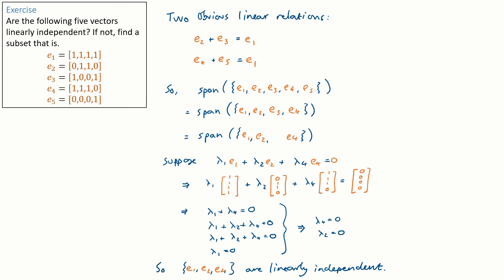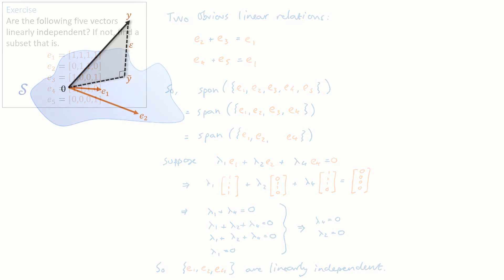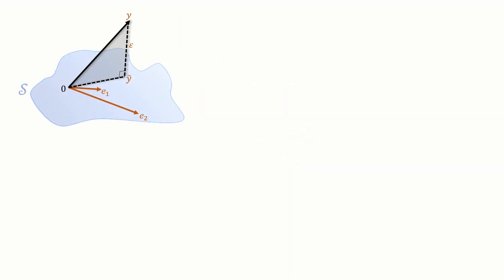By now you're surely asking, this algebra is all fine for someone who likes doing algebra but what's the point? The answer is if we have the right geometric intuition about vector spaces we can understand what's going on with least squares estimation. Let me explain.